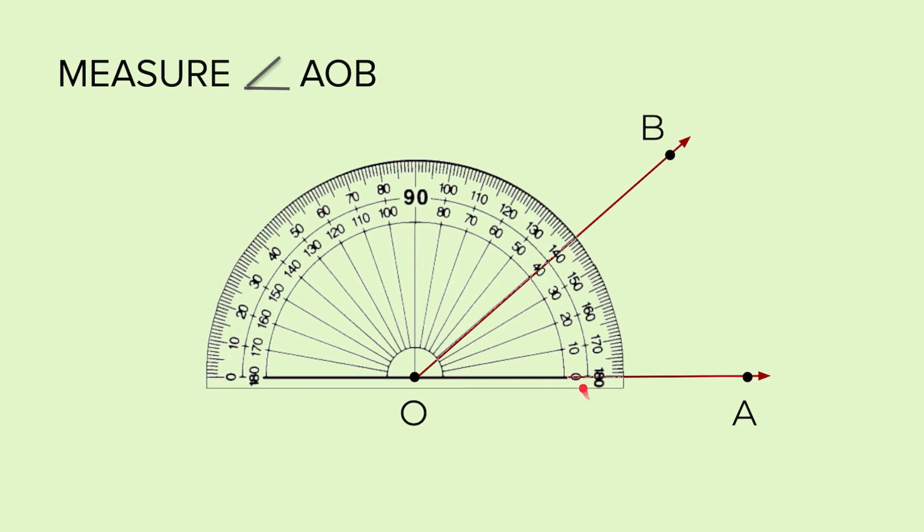Here the other reading is 180 and it is decreasing. So this reading is not to be taken. We have to keep the base ray on 0. Since the 0 is in the inner circle, we will read the inner circle reading.